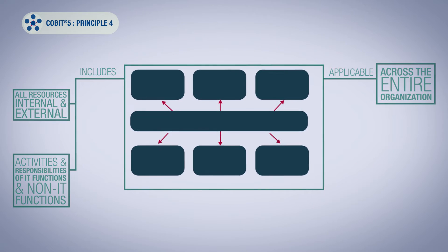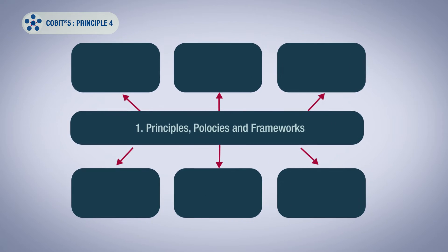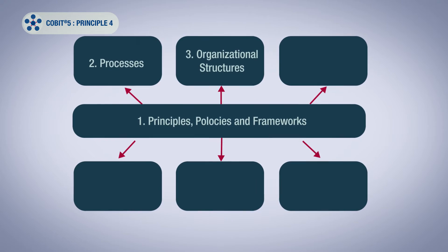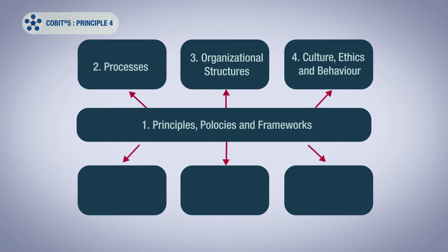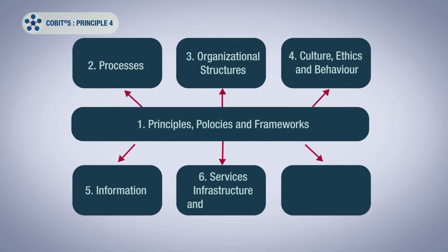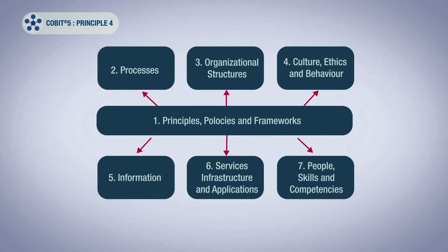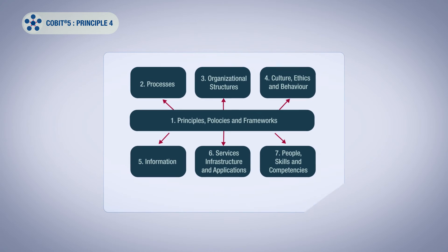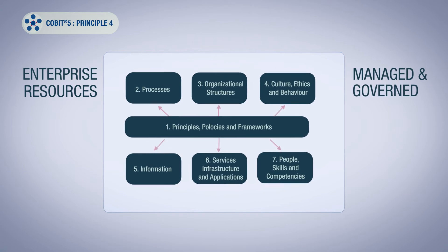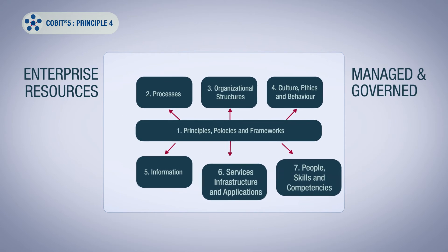COBIT-5 defines seven enablers: principles, policies and frameworks; processes; organisational structures; culture, ethics and behaviour; information; services, infrastructure and applications; and people, skills and competencies. We should also remember that many of these enablers are enterprise resources that need to be managed and governed in their own right — for example, people and services.